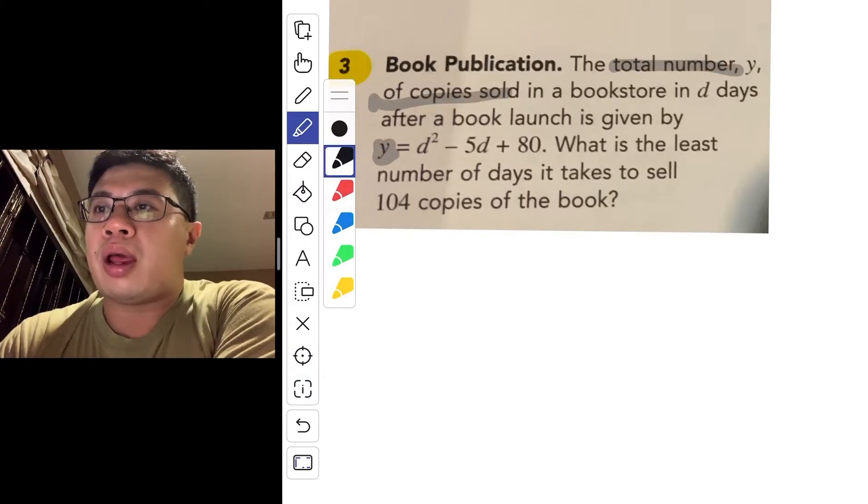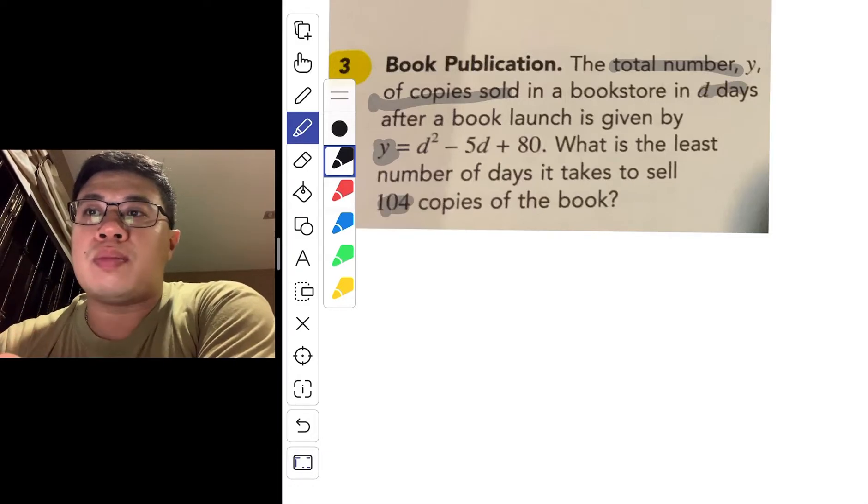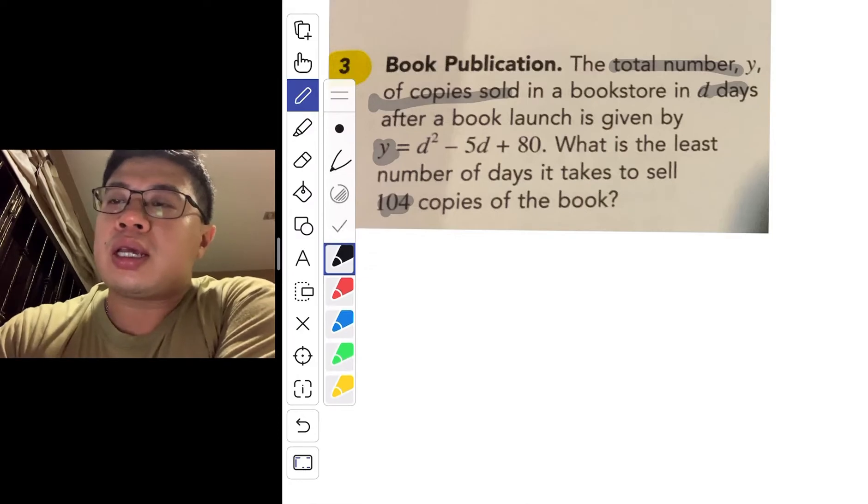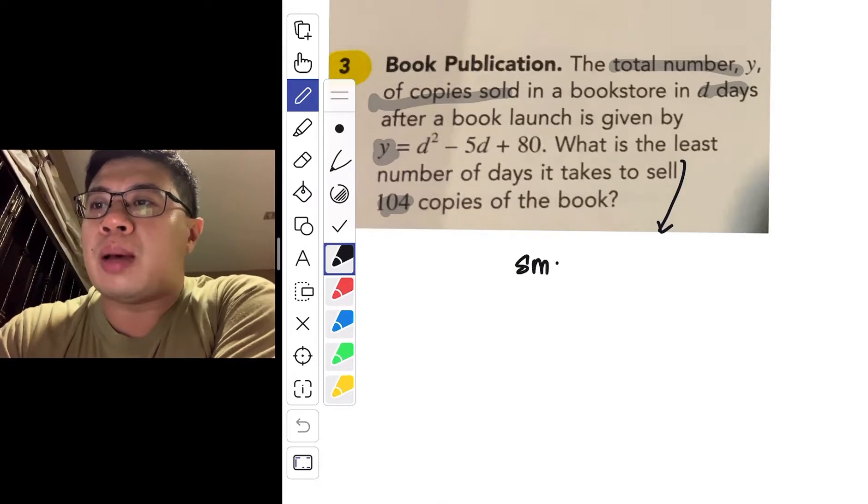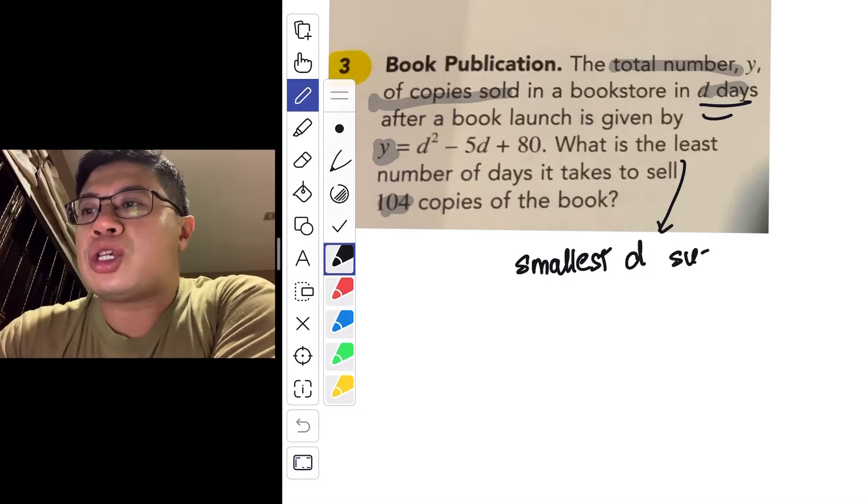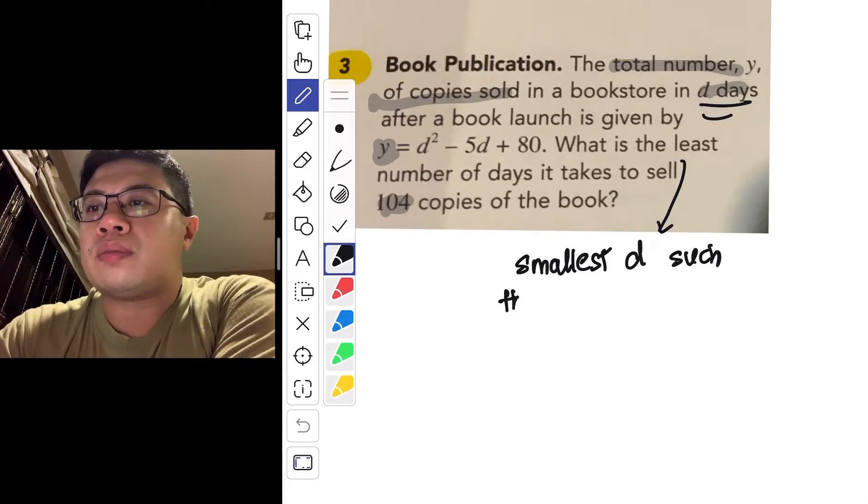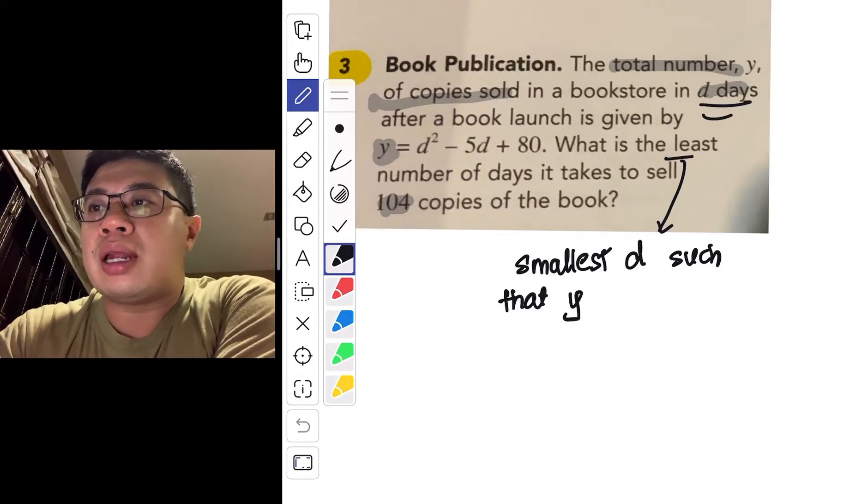And d days, and here it relates to 104. What does it mean? It's just saying that basically you want to find the least number of days, so called the smallest number of days. Or in our variable here, the smallest d such that your y at least, right? The least number of days, such that your y at least